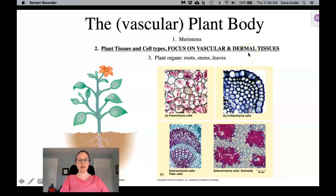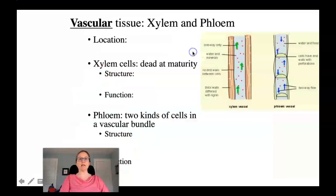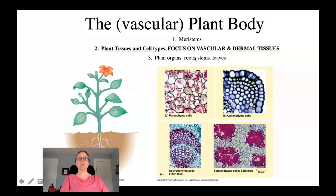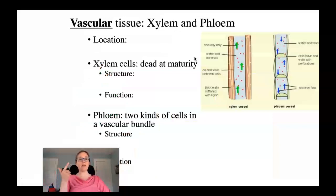Hey plant biologists, I'm back and this is the third video screencast about chapter 23. This one will focus on vascular and dermal tissues. So if you'll remember, there are three kinds of tissues: ground tissue, which we covered in the last video, and then vascular and dermal tissue.